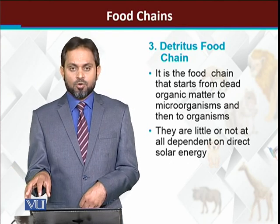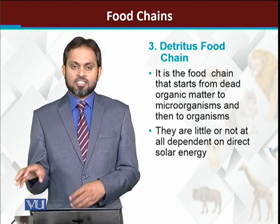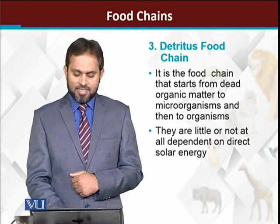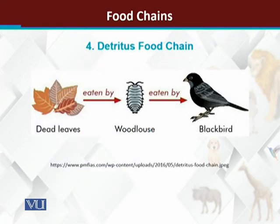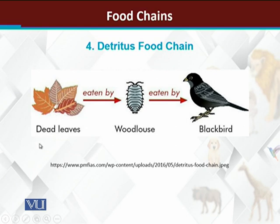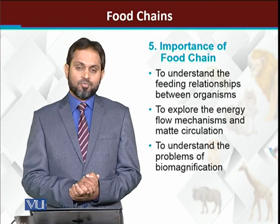Simply, when the starting point is decaying material, that food chain is the detritus food chain. In this diagram, you can see dead leaves being eaten by wood louse, and wood louse being eaten by a blackbird — this is a detritus food chain. If instead of dead leaves there were green leaves, it would have been a grazing food chain. So what is the importance of food chains?